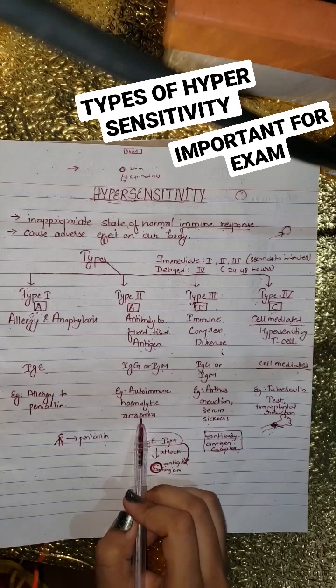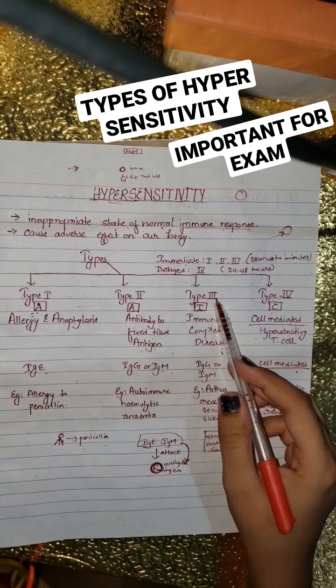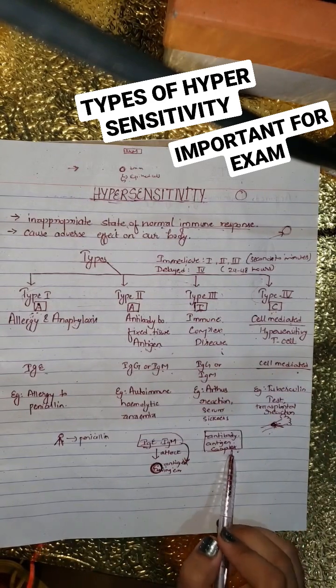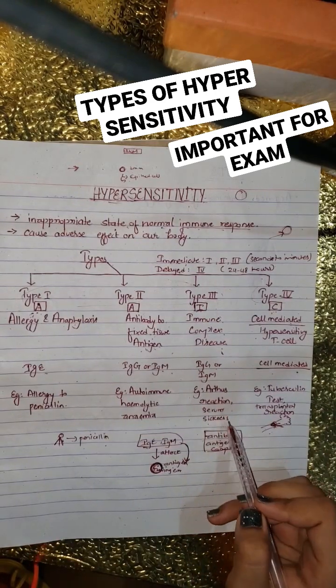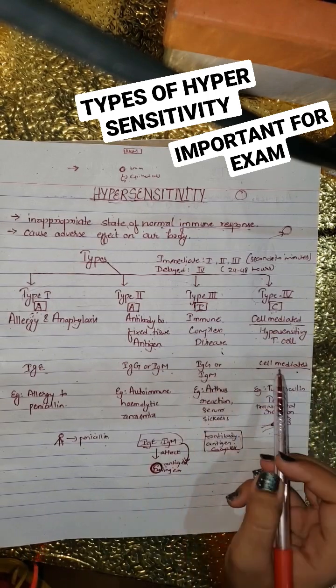For example, autoimmune hemolytic anemia. Type 3 is immune complex disease, which means this reaction is shown due to antigen-antibody complexes. For example, Arthus reaction and serum sickness. Type 4 is not associated with antibodies; it is